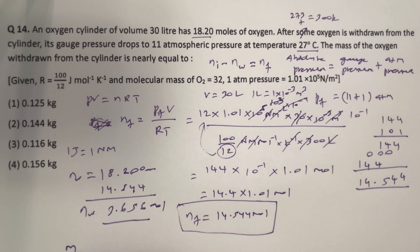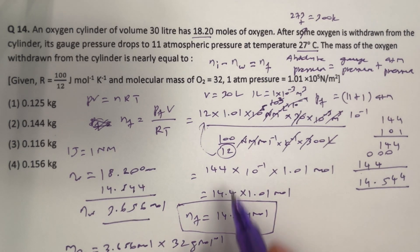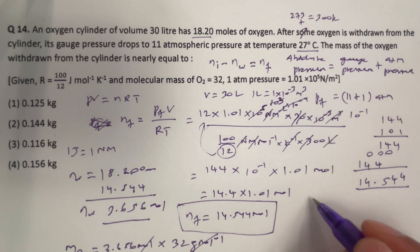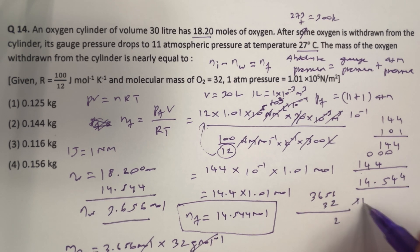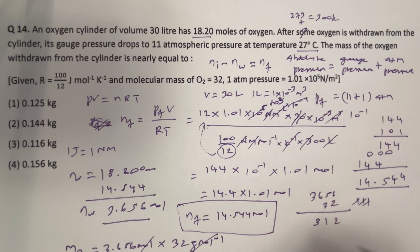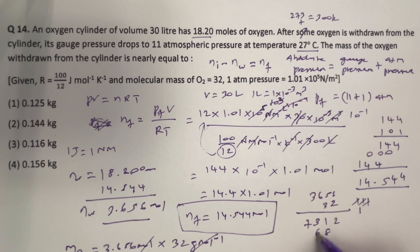Therefore, mass of O2 withdrawn equals 3.656 moles times 32 grams per mole, because 32 is the molar mass of O2. So we will get the result in grams, which we then need to convert to kilograms. Calculating 3.656 times 32: working through the multiplication digit by digit — 2 times 6 is 12 carry 1; 2 times 5 is 10 plus 1 is 11 carry 1; 2 times 6 is 12 plus 1 is 13 carry 1; 3 times 5 is 15 plus 1 is 16 carry 1; 3 times 8 plus 1 is 19.